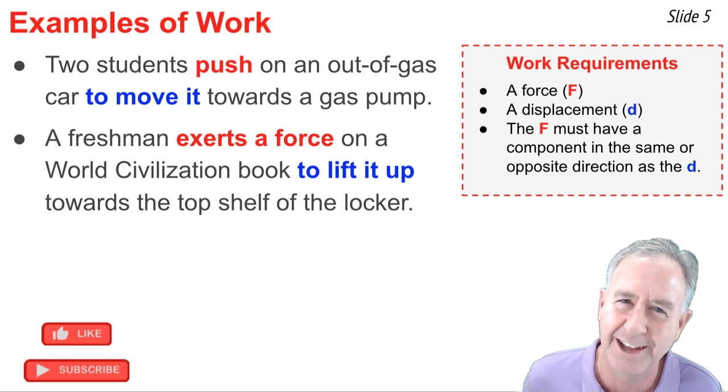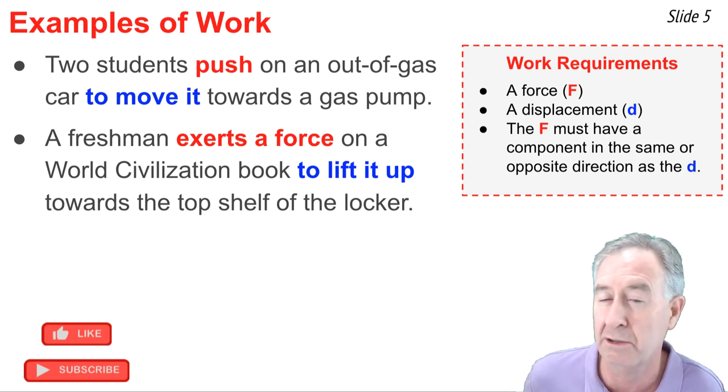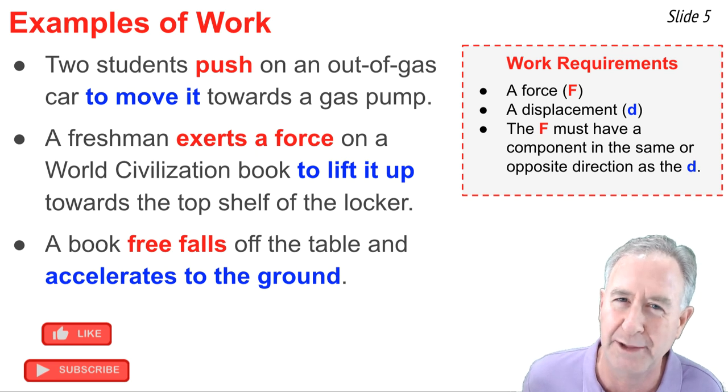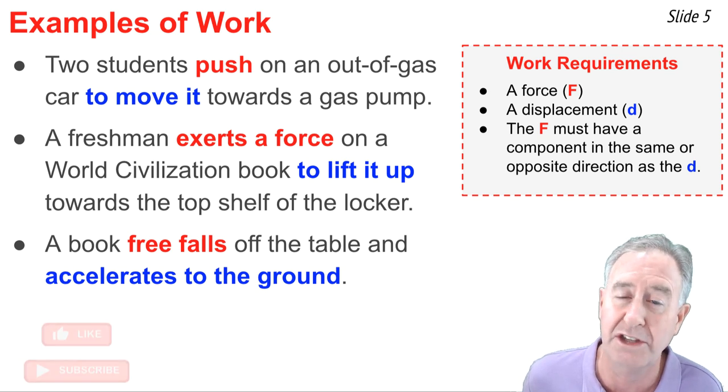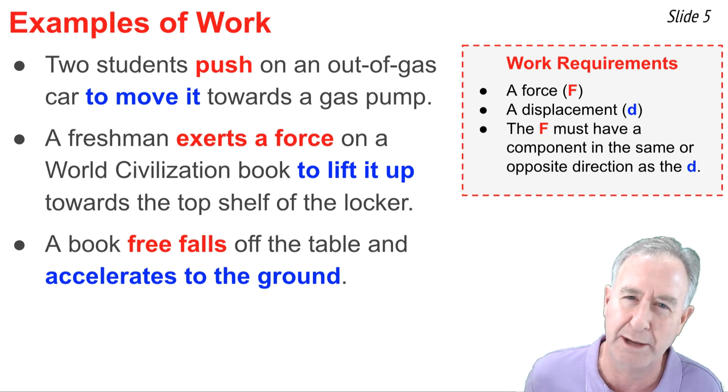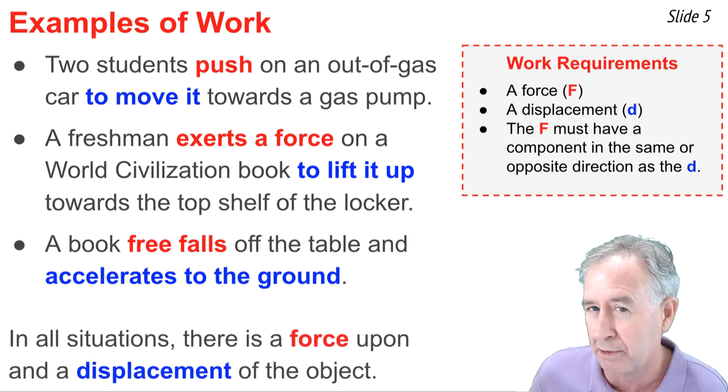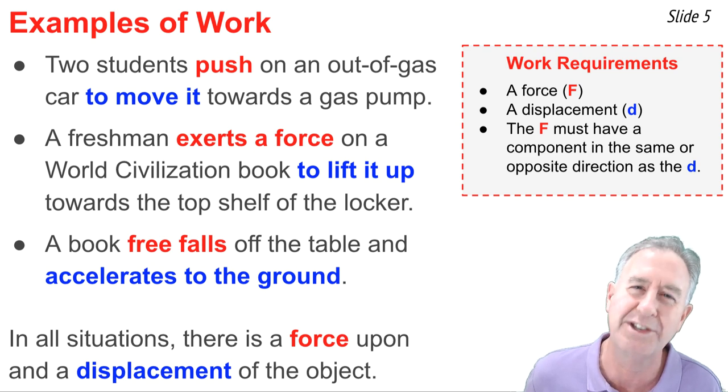In our third example, let's consider a book that has been nudged off a table and free falls and accelerates towards the ground. This is work being done on the book. There's a force of gravity acting on the book, and it acts in the same direction that the book is displaced, downwards. That's an example of work. In all these examples, we have a force that acts upon an object to cause the object's displacement.